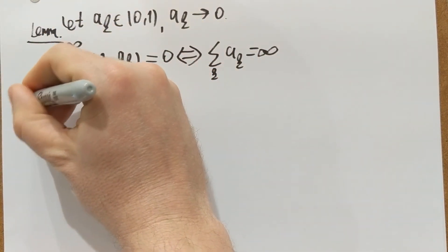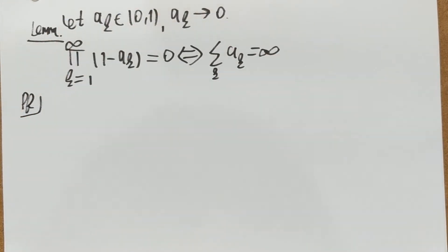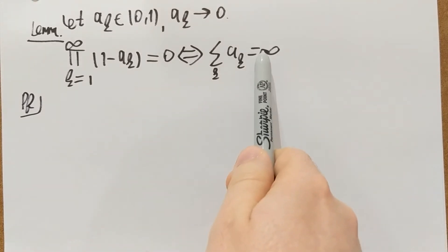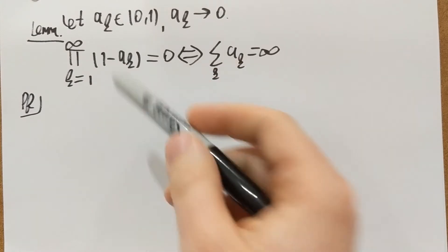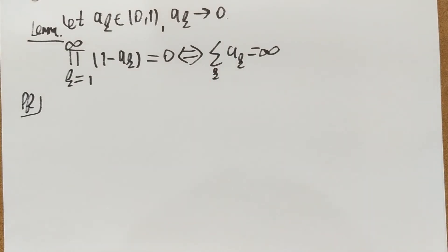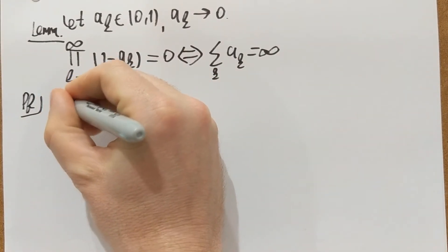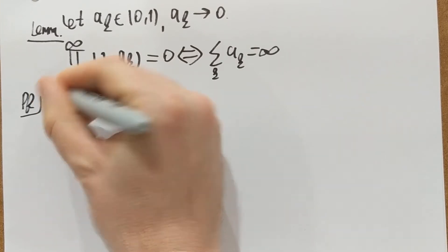Let's look at the proof. There are two statements: Statement 1 is that product equals 0 implies sum equals infinity; Statement 2 is that sum equals infinity implies product equals 0. I'm going to start with proving the second one, this direction.